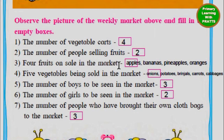How many people are selling fruits? We have two people selling fruits. Next: name four fruits on sale in the market — four fruits that are being sold in the market.